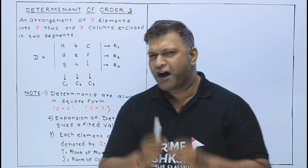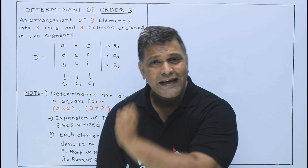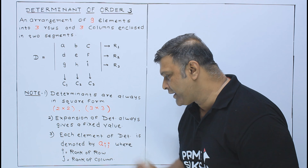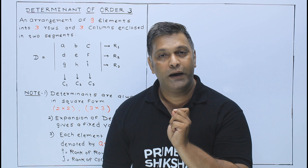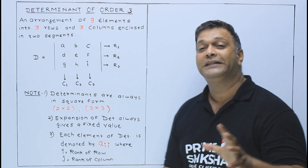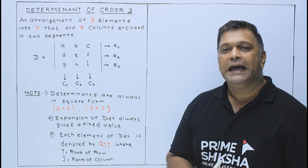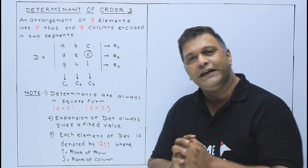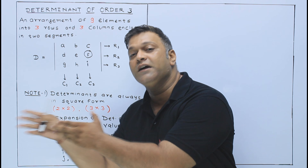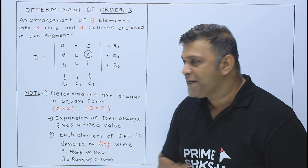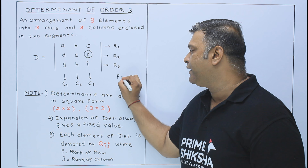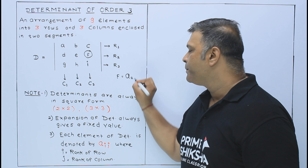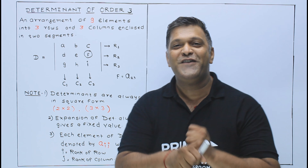Third point: each element — हर एक element जो आपका Determinant का है — उसको denote करेंगे by A_IJ. यहाँ I का मतलब है rank of row — कि वो element कौन से row से लिया हुआ है, और J बताता है rank of column — कौन सी column से वो element आ रहा है. For example, आपने element F को denote किया — तो F row 2 में और column 3 में आ रहा है, इसलिए इस F element को आप A₂₃ denote करोगे.